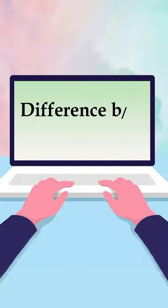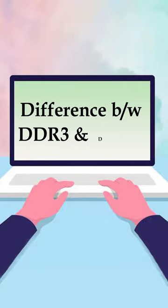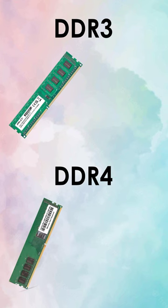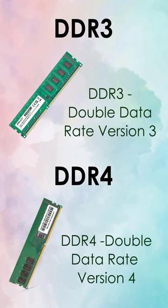Difference between DDR3 and DDR4. DDR3 stands for Double Data Rate version 3. DDR4 stands for Double Data Rate version 4.